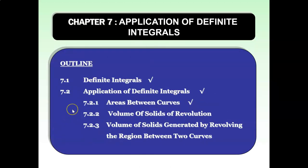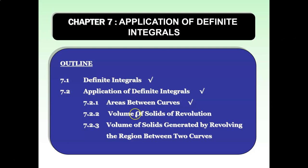These are the outline for chapter 7. For the first subtopic, we learn about definite integrals — what is a definite integral. For the next subtopic, we will learn about applications of definite integrals. There will be three subtopics: areas between curves, volume of solids of revolution, and volume of solids generated by revolving the region between two curves. For today, we're only going to cover 7.1 up until 7.2.1.